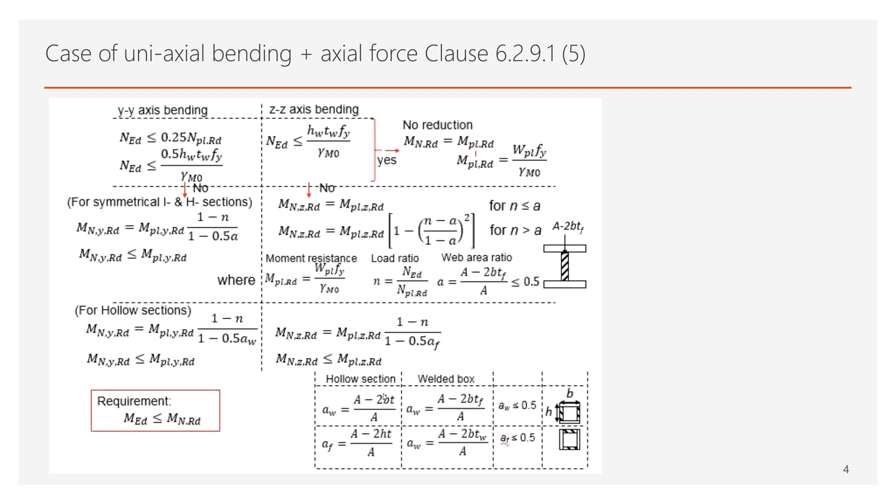The definition of low means less than 25% of the axial capacity of the entire section or less than 50% of the axial capacity of the web. This slide shows the design for the uniaxial bending plus axial force scenario. The bending can occur in the yy axis or in zz axis. When the axial load is relatively low, as prescribed in the slide for the yy axis and zz axis, no reduction will be applied on the moment resistance of the member.